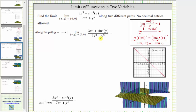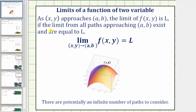Before we look at this in three dimensions, for review: as x comma y approaches a comma b, the limit of f of x comma y is L if the limit from all paths approaching a comma b exist and are equal to L. So looking at the surface, if we were approaching the ordered pair a comma b, in order for the limit to exist and equal L from all paths, we must be approaching the function value L.